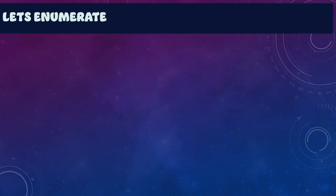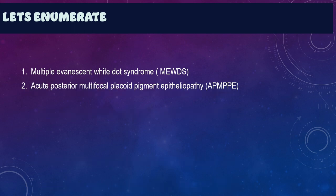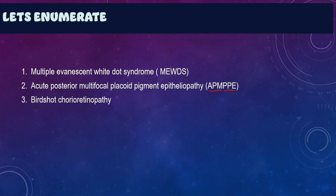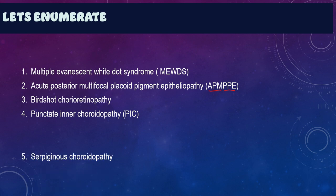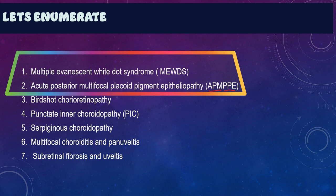Let us enumerate the various white dot syndromes. We have the multiple evanescent white dot syndrome, also called MEWDS. Then we have acute posterior multifocal pigment epitheliopathy, abbreviated as APMPPE. Then we have birdshot chorioretinopathy, punctate inner choroidopathy, serpiginous choroidopathy, multifocal choroiditis and panuveitis, and subretinal fibrosis and uveitis. For this video we shall be limiting ourselves to MEWDS and APMPPE.